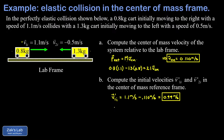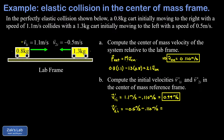We do the same thing for the cart initially moving to the left. V2 initial prime uses the same transformation — its velocity is negative 0.5 meters per second, and we subtract 0.110 meters per second. Running to the right makes a leftward-moving cart appear to move faster, so the magnitude increases. This gives an initial velocity in the center of mass reference frame of negative 0.61 meters per second.